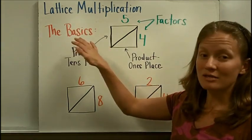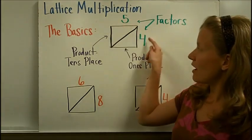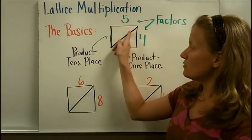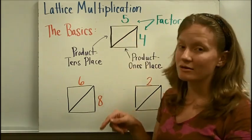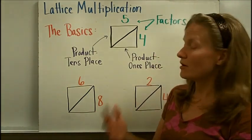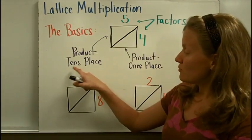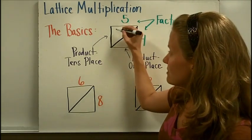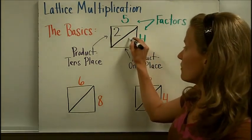The basics you need to know is that it begins with a box — one square — and you will put the factors on the top and the right-hand side of the box. You will draw a diagonal line and then put the product of those two factors inside the box. It's important where you put the tens place and the ones place part of that product. The product of 5 times 4 is 20, and we put the number in the tens place in the upper left-hand box, and the number in the ones place in the lower right-hand box.